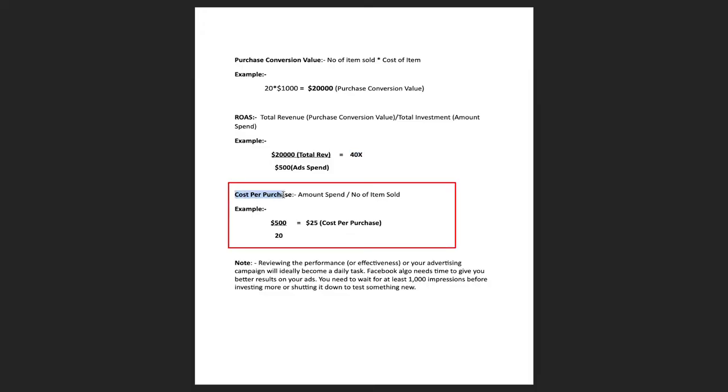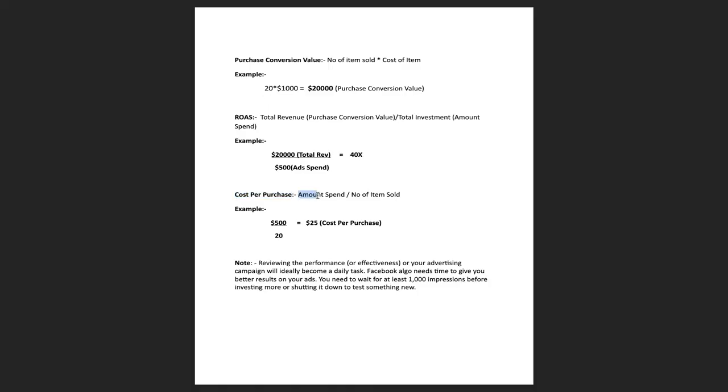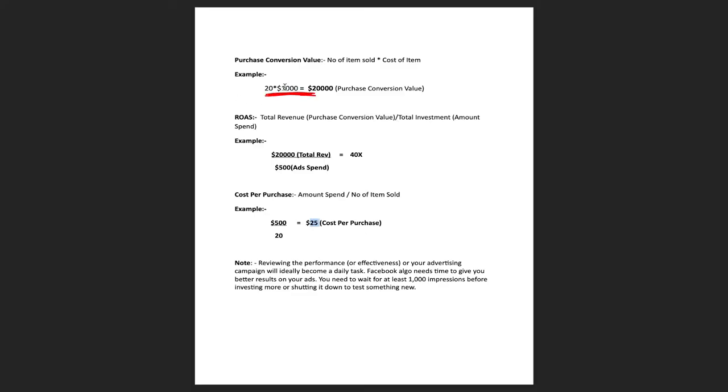The next metric is Cost Per Purchase — how much it costs you to get each purchase. For example, if I sold 20 products and spent $500 on ads, dividing $500 by 20 gives $25 cost per purchase. That means I paid Facebook $25 for each sale, and each product earns me $1,000. So I spent $25 and earned $1,000 per purchase from Facebook.